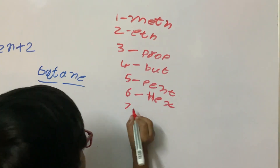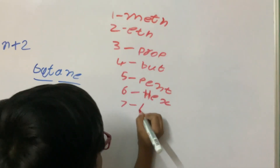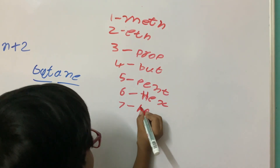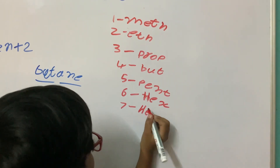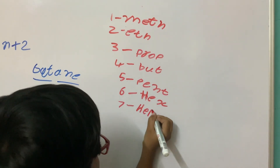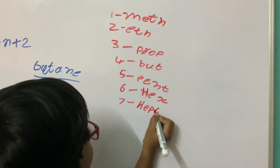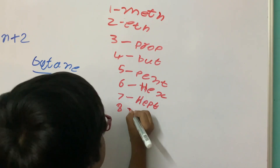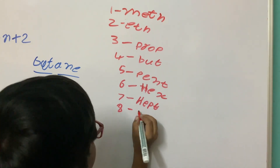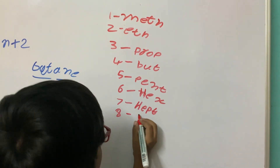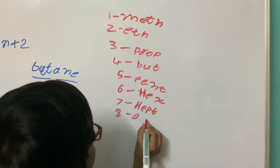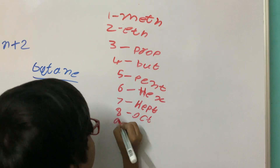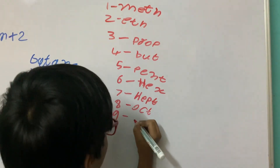For 7, it's Hept. For 8, it's Oct. For 9, it's Non.